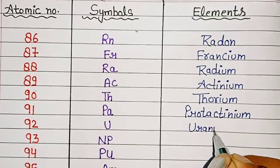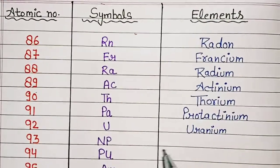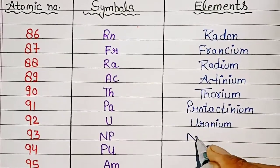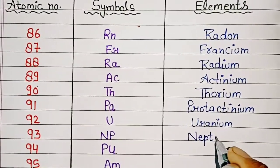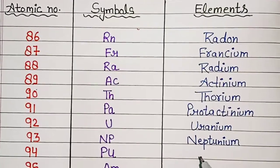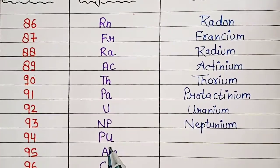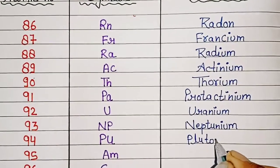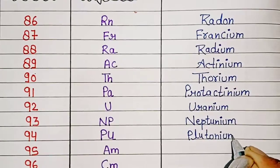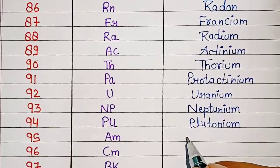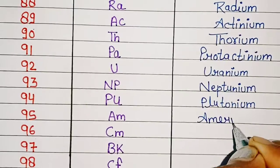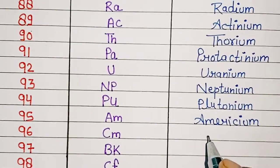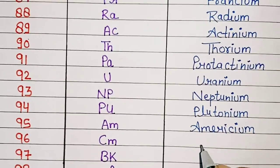93, Np, Neptunium. 94, Pu, Plutonium. 95, Am, Americium. 96, Cm, Curium.